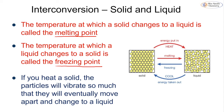If you heat a solid, the particles start to vibrate even more than they already do, and eventually they vibrate so much that they move apart and change into a liquid. When going from a solid to a liquid — melting — we are putting energy in to make the particles move further apart. When cooling — freezing — energy is taken out, causing the particles to come closer together and become more regularly arranged.